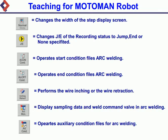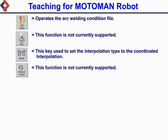Operates auxiliary condition files for ARC welding. Operates the ARC welding condition file. This function is not currently supported. This key is used to set the interpolation type to the coordinated interpolation. This function is not currently supported.